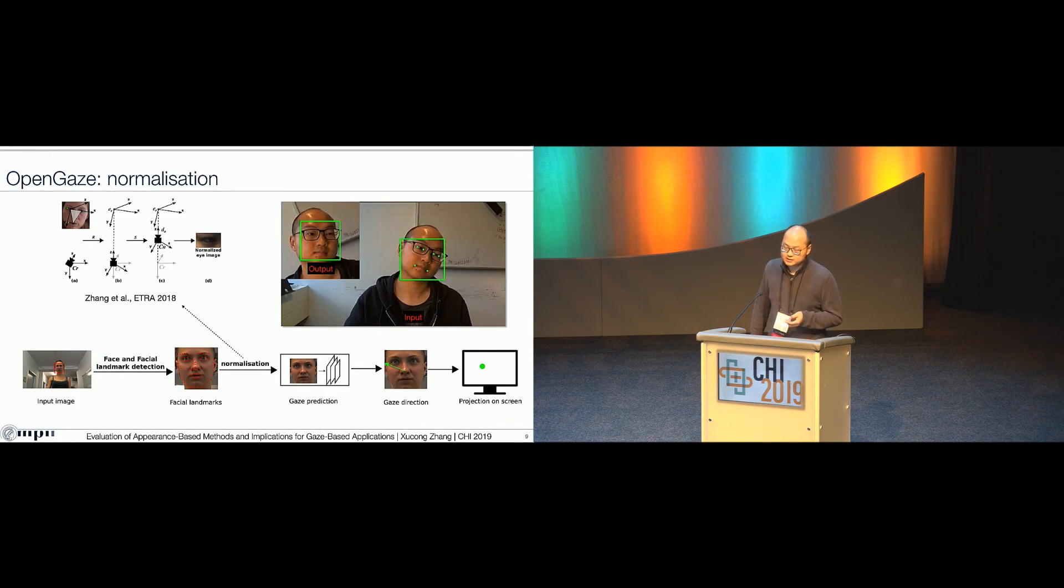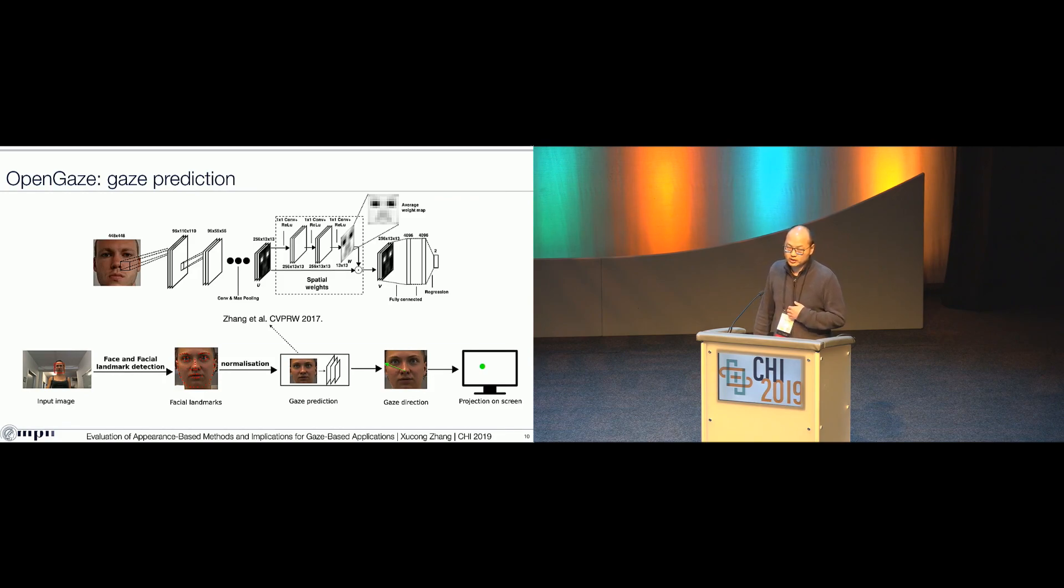And then we feed this face image into a gaze estimation model. This part is another one of our previous works. With the normalized face image as input, we first pass it through several convolutional layers and then we pass it through a novel spatial-weighting mechanism which efficiently uses the information from the normalized face image. And at last, it outputs the gaze direction in the camera coordinate system. For more information, please refer to our previous work. And as I mentioned before, at last we can project this 3D gaze direction to the 2D screen.